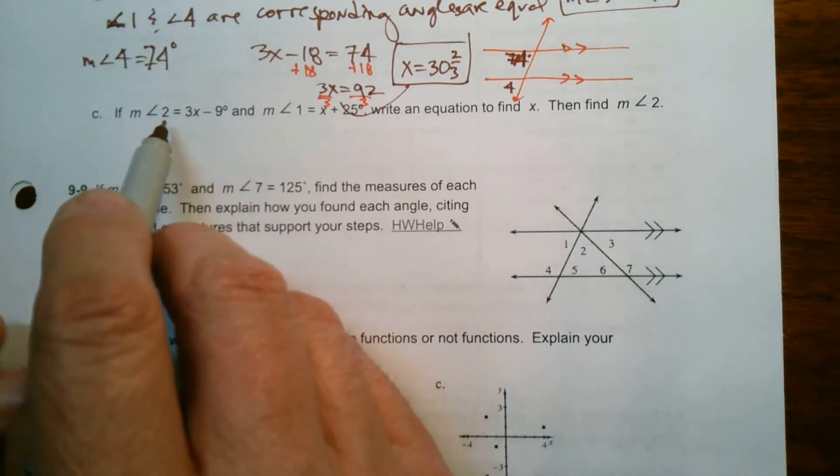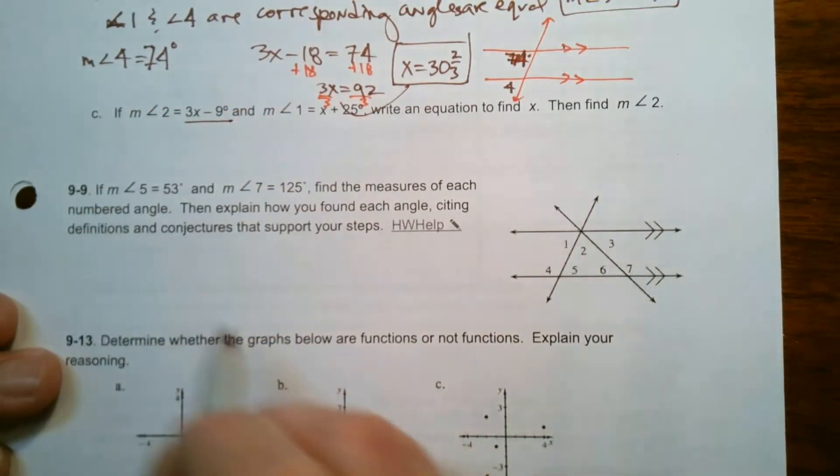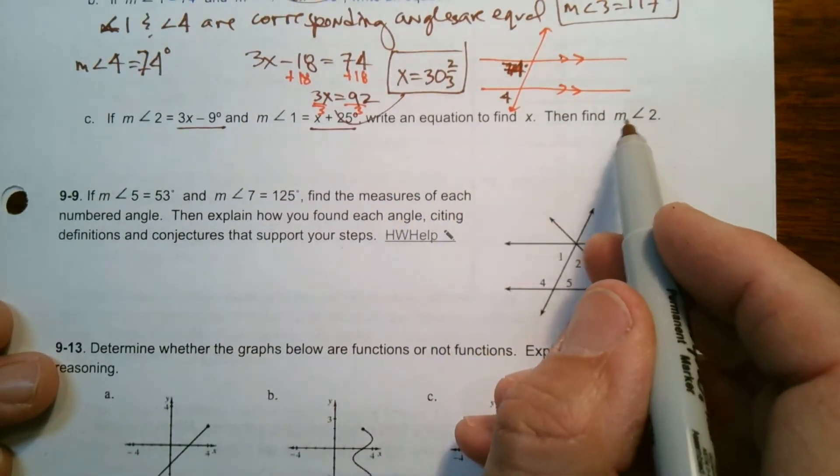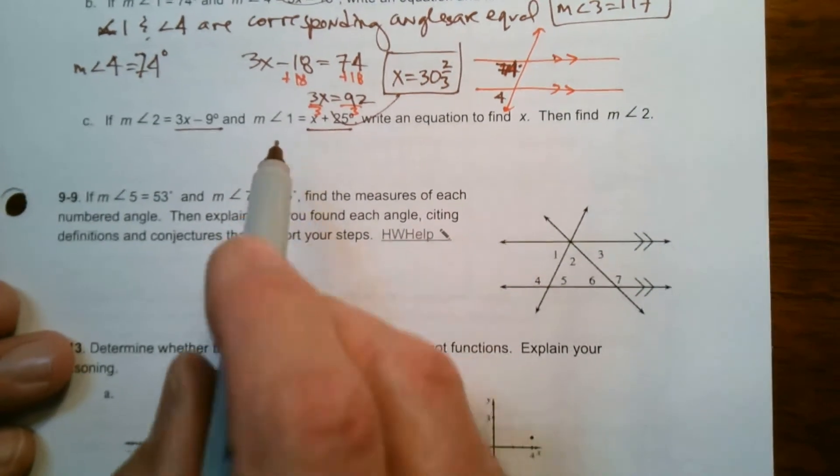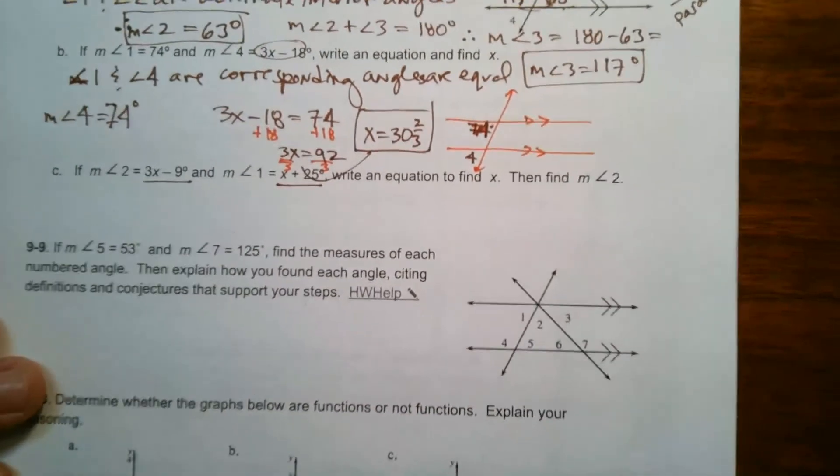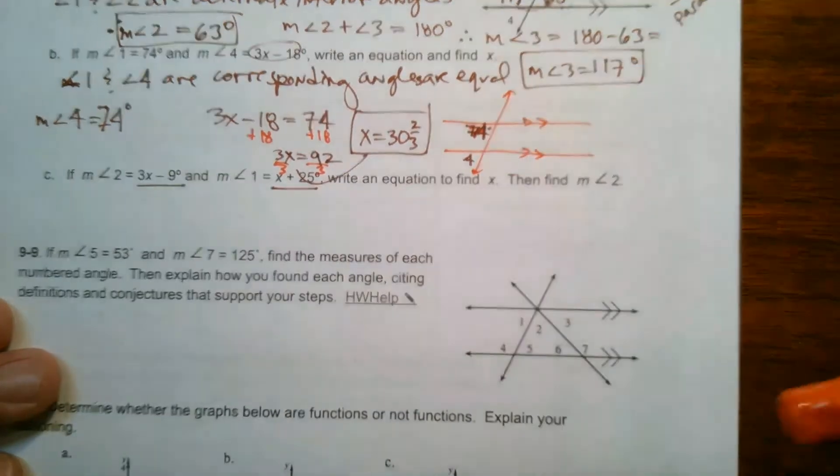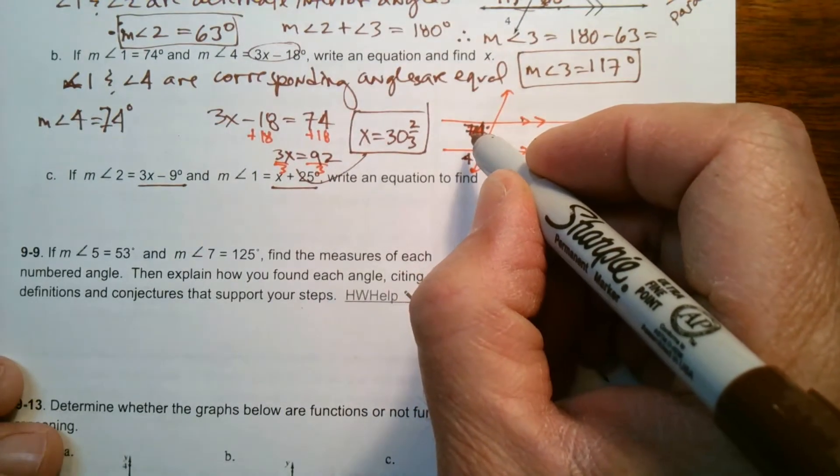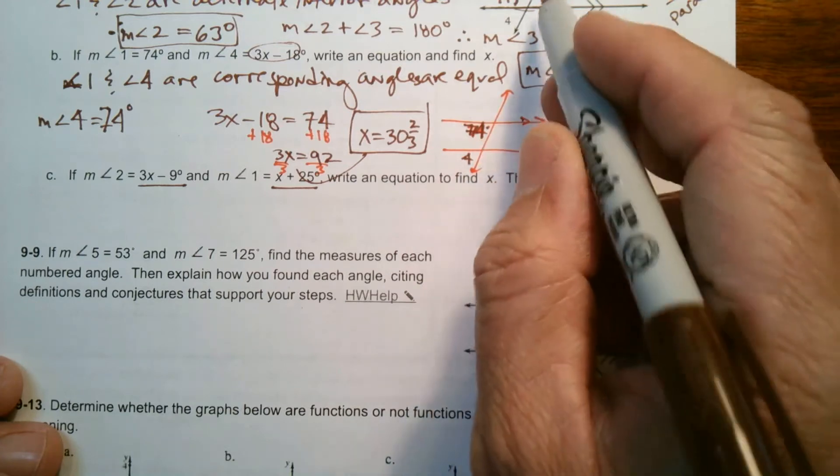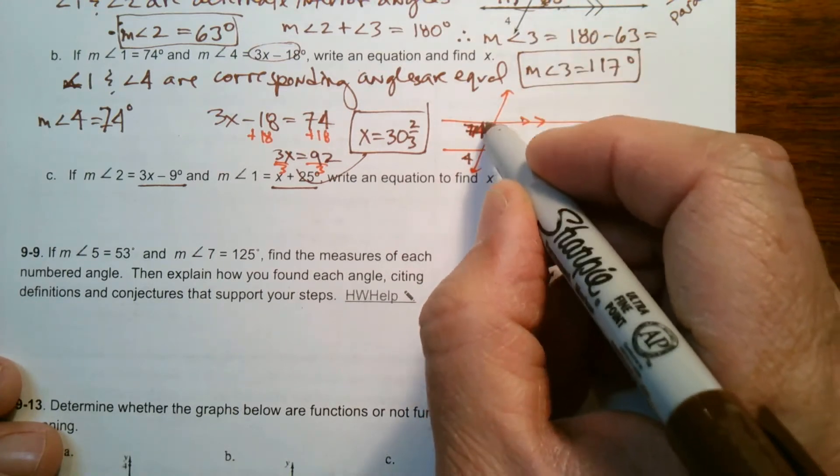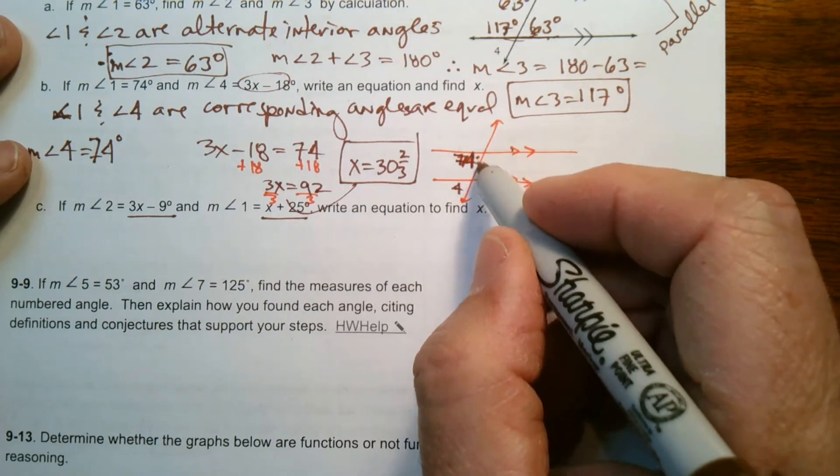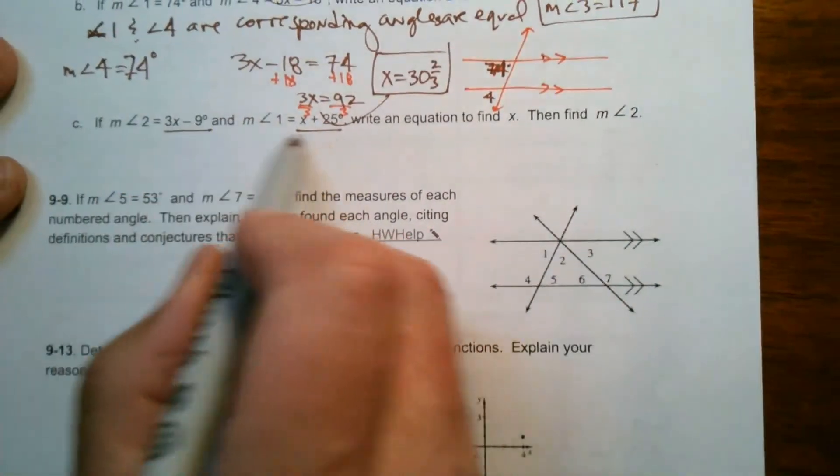Last one, C. Now it says that the measure of angle 2, I should say, is 3x minus 9, and the measure of angle 1 is x plus 25. So write an equation for x and then find measure. So I got to find x first. So what's true about 1 and 2? We go back to my drawing. 1 is this one here. And 2, my original 2 was here. So we know those are equal because they are, we did that in the beginning. Angle 2 and angle 1 are alternate interior angles, which make them equal.